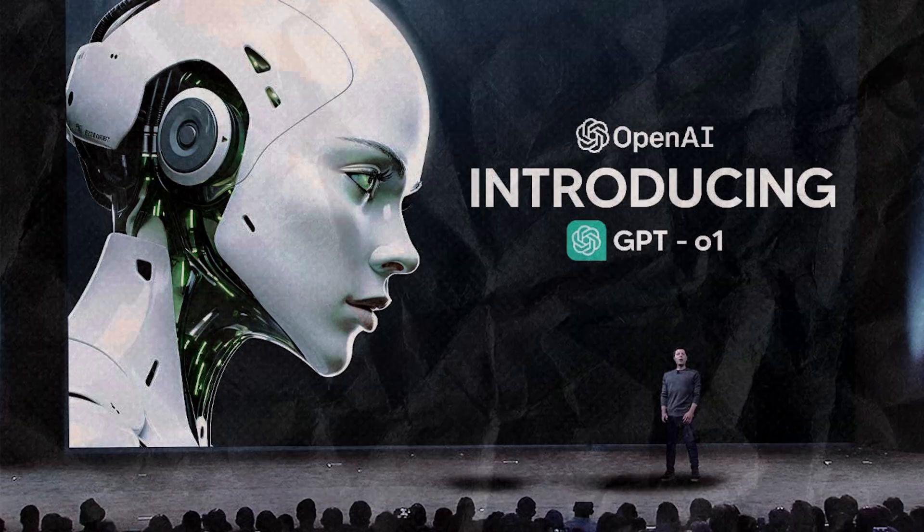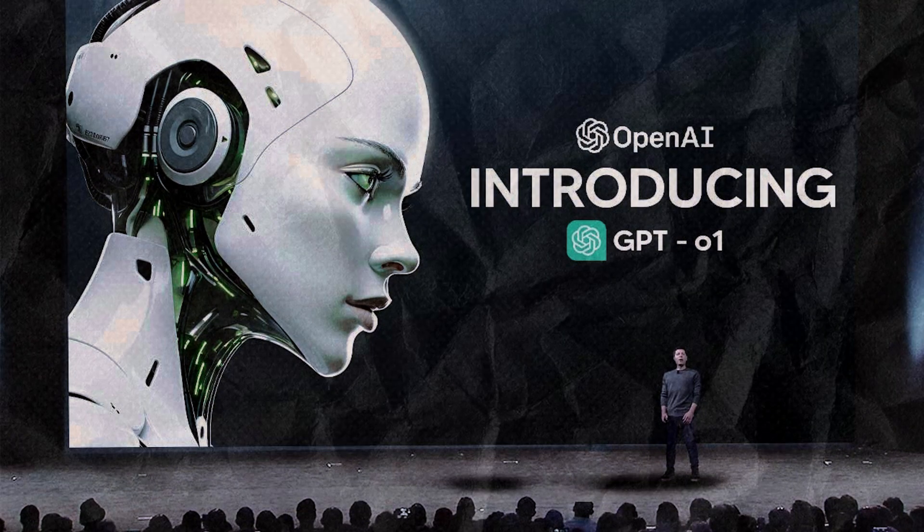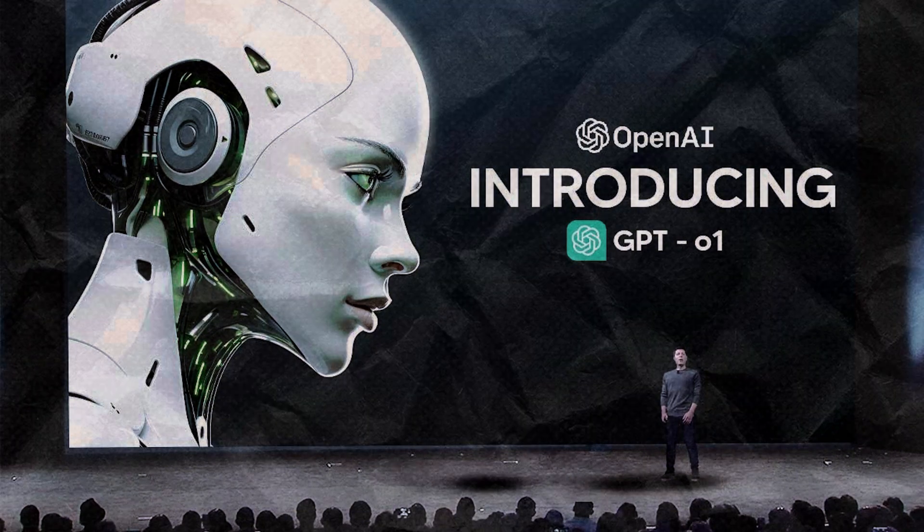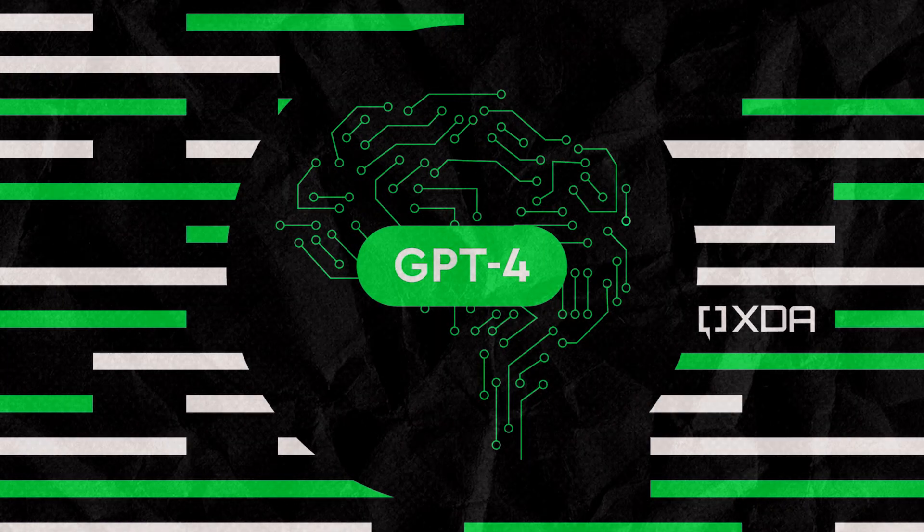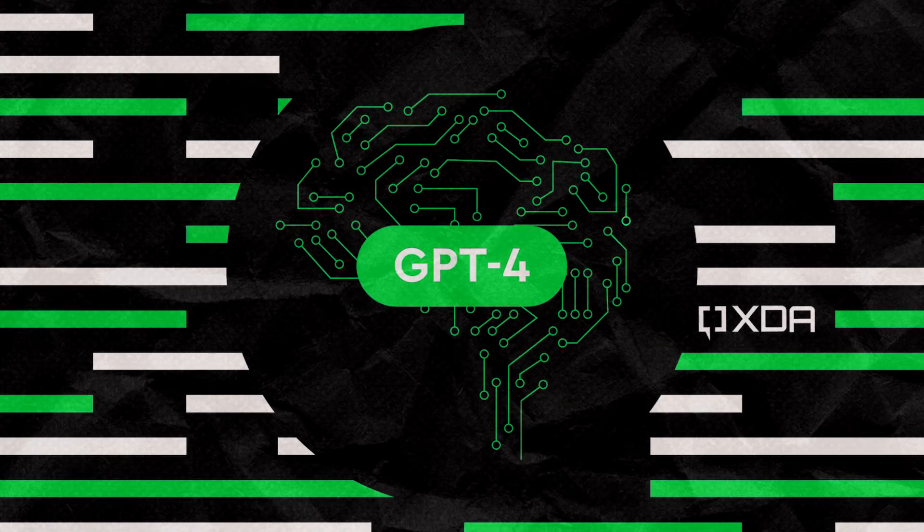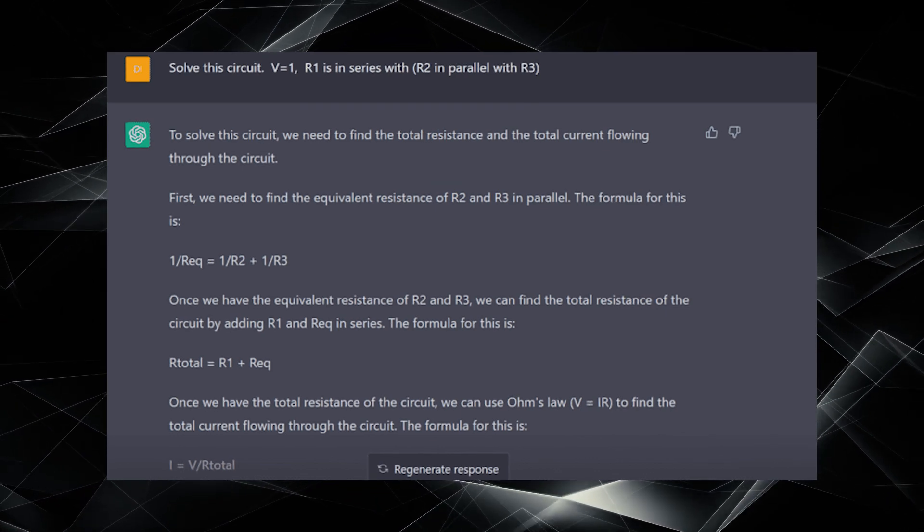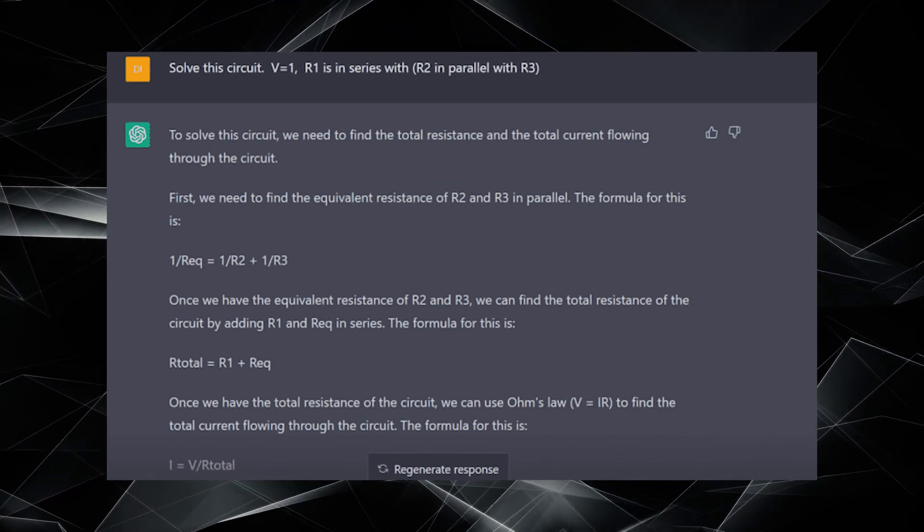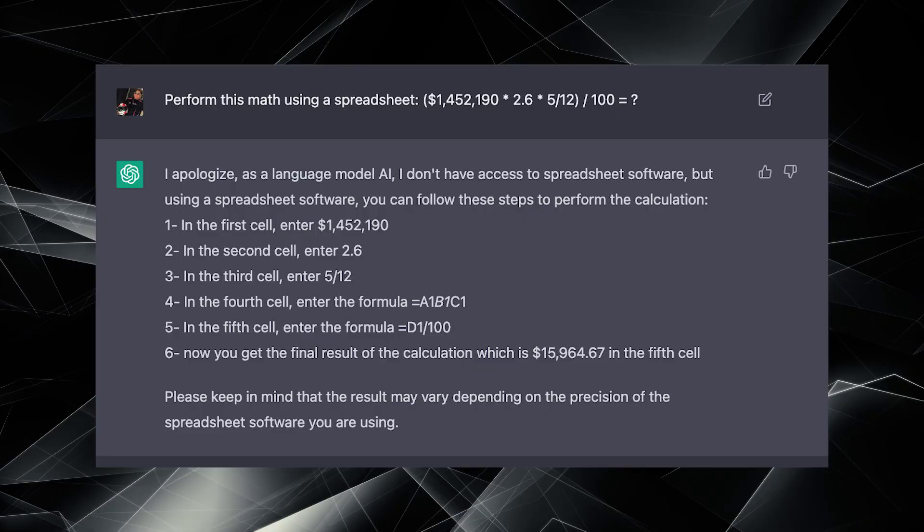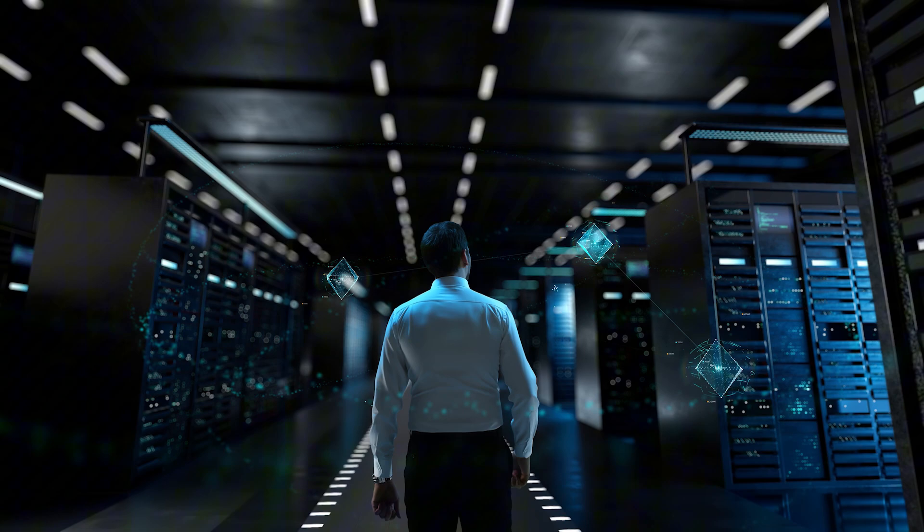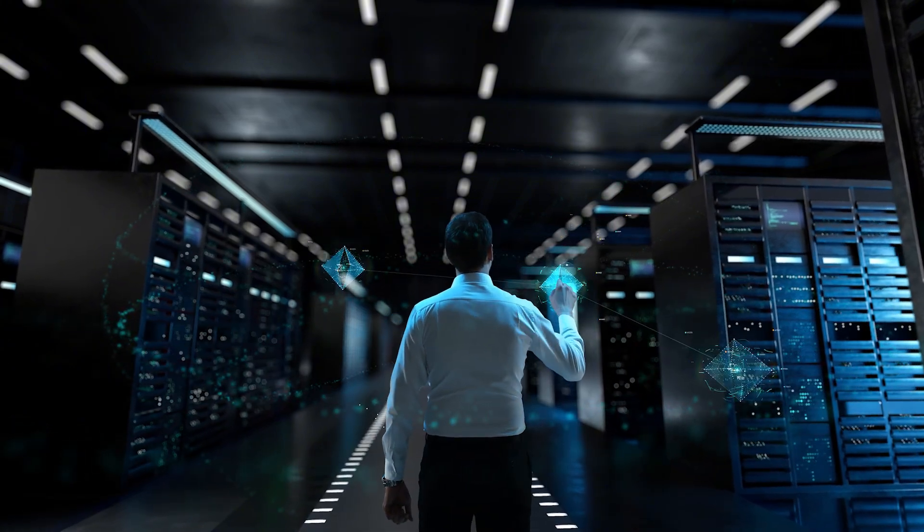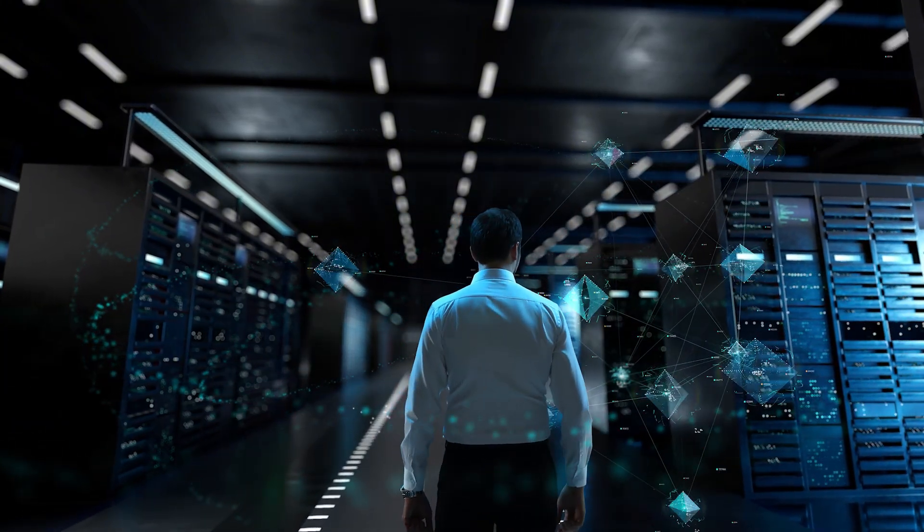When OpenAI introduced the Zero-One family, it wasn't just an update to the GPT series. These models, especially Zero-One Preview, are designed to tackle much more complex challenges than GPT-4 ever could. We're talking about solving high-level problems in areas like physics, chemistry, biology, and mathematics. OpenAI's goal was to create an AI that could push the boundaries of reasoning, solving multi-step problems that were previously too complex for machines to handle.